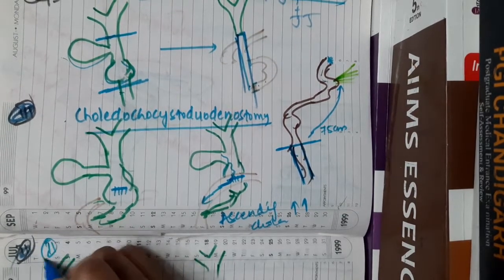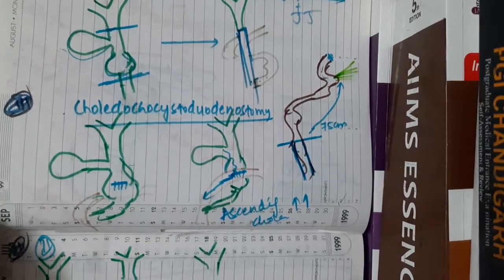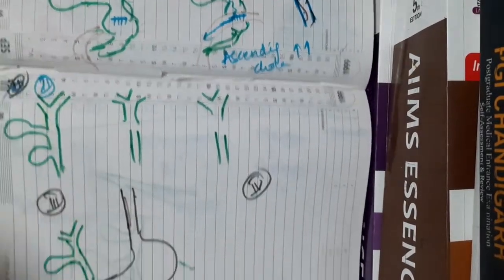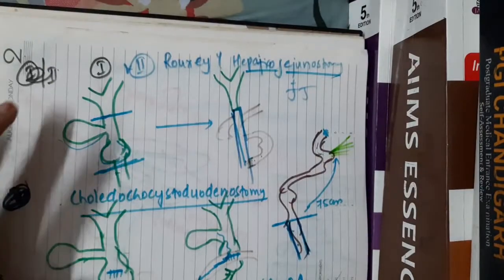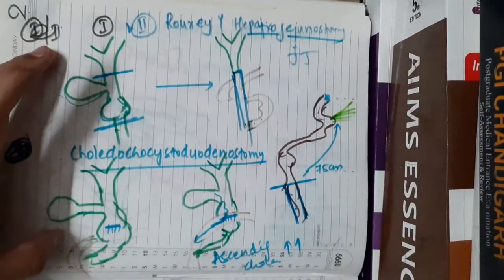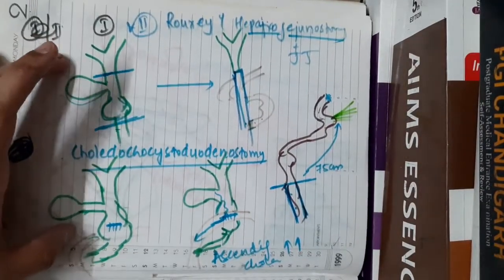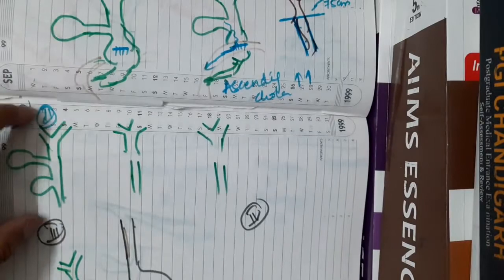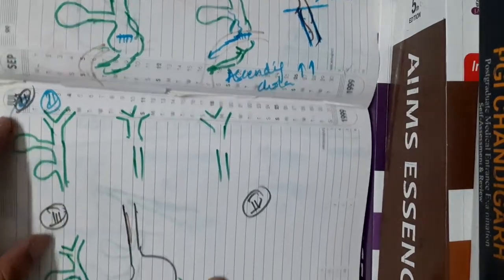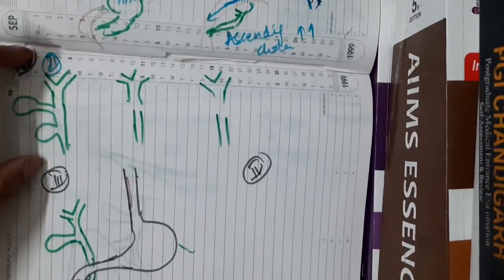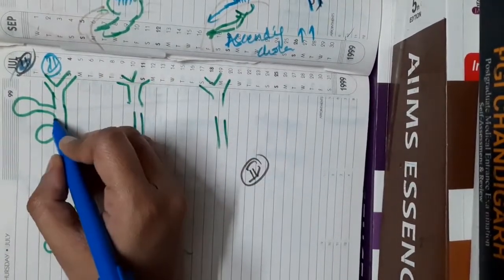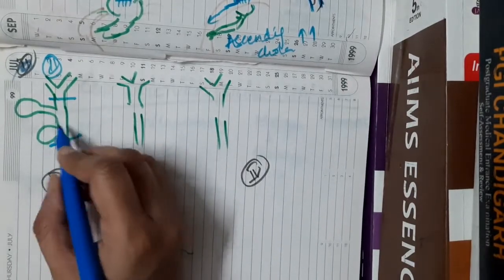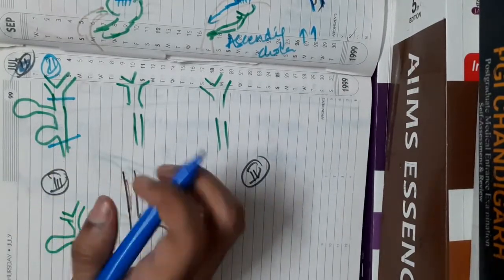Only for Type 2, there is one additional procedure. While the previous two procedures apply to both Type 1 and Type 2, this third procedure is done only for Type 2 — excision of the diverticulum along with the gallbladder.